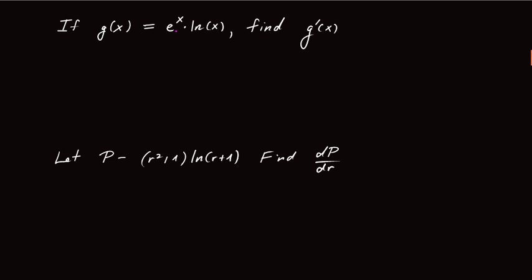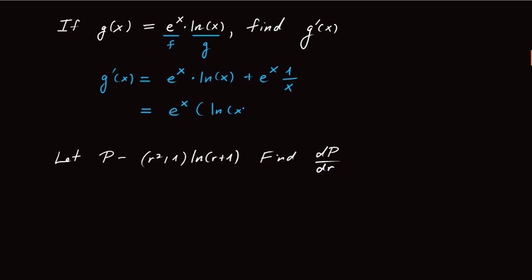In this example, g of x is equal to e to the x times ln of x, and I'm asked to find g prime of x. So my first function f is e to the x, my second function is ln of x. By the product rule, g prime of x equals the derivative of the first function — the derivative of e to the x is simply e to the x — times g, which is ln of x. Then I add f without differentiating it, which is e to the x, times the derivative of ln of x, which is 1 over x. I could combine terms and write this as e to the x times the quantity ln of x plus 1 over x.